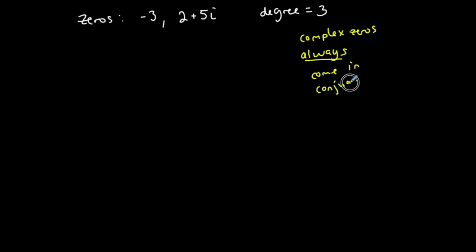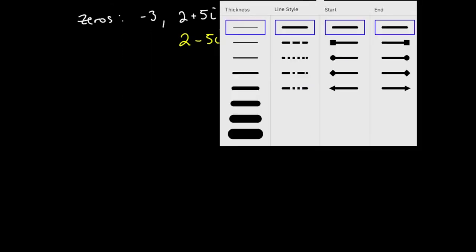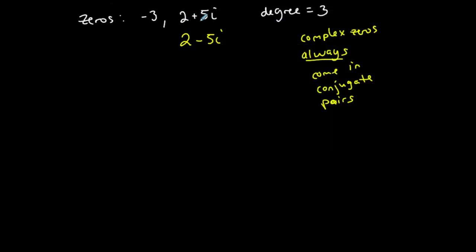Which means that if two plus five i is a zero, its conjugate is two minus five i, and that's also a zero. So anytime you're given one complex zero, you automatically know another one.